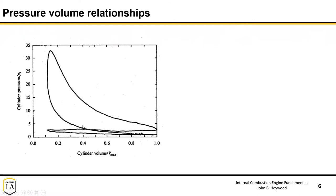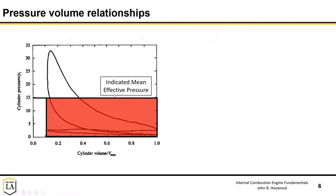One way we categorize the net area is to fit a rectangle: the height at the displaced volume is called the indicated mean effective pressure (IMEP). This gives a sense of how much work your engine can do, and it normalizes per unit volume for a fair comparison between engines of different sizes. 'Indicated' means measured inside the cylinder; 'brake' means what's coming out of the engine after accounting for friction losses from bearings and moving parts.